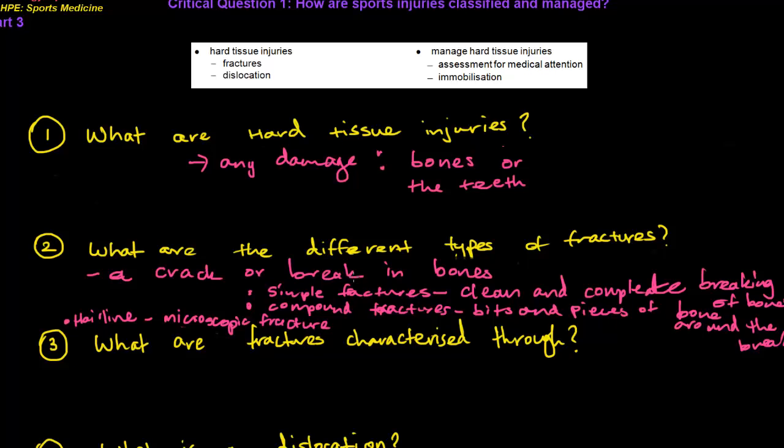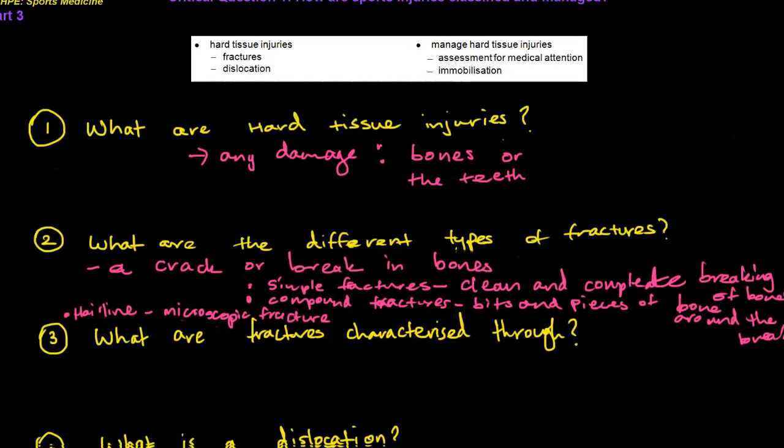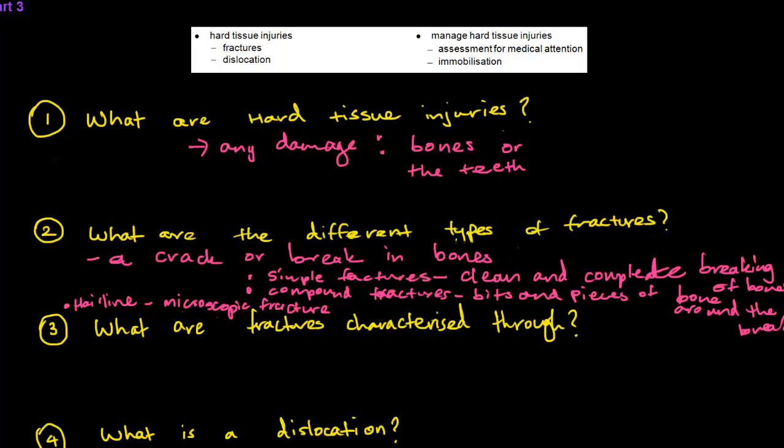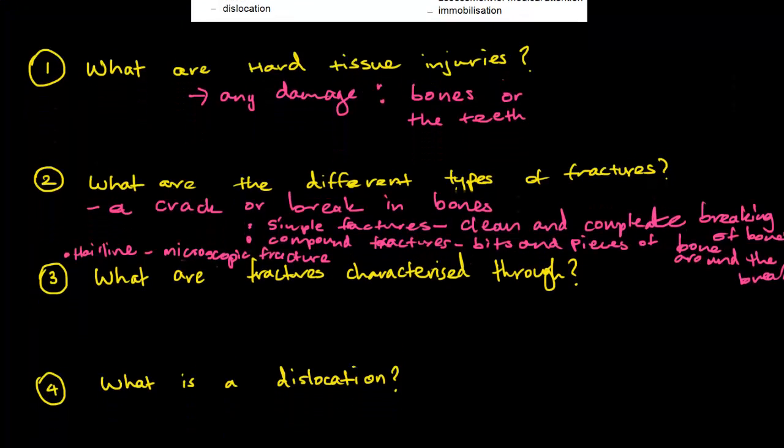I'd just like to add on that for the different types of fractures, you don't actually need to know in that much detail. I've been looking at the previous HSC questions and all that. They just want you to know in general what a hard tissue injury is and what a fracture is. If you can't remember all three types of fractures, that's okay. Just understand generally what a fracture is. It's just some extra information just in case, because this dot point doesn't actually tell us what we need to do in detail. So might as well cover a little more detail just in case.